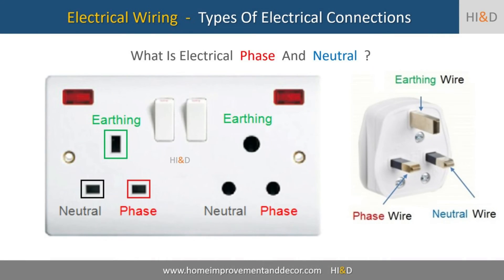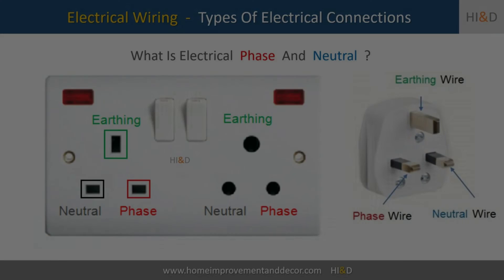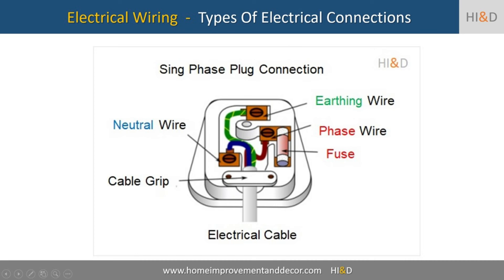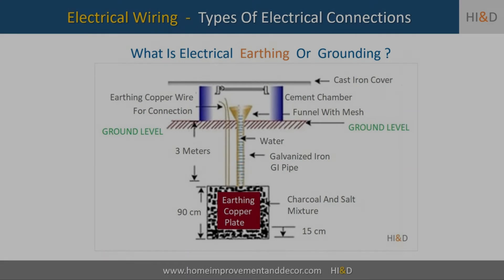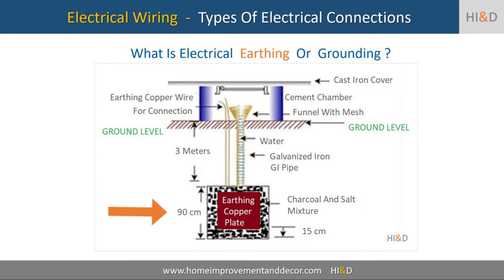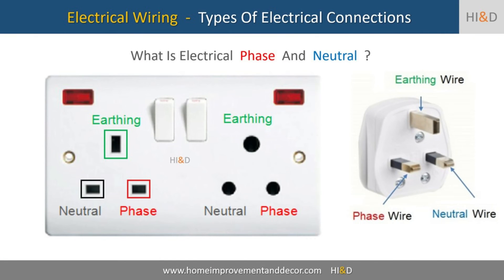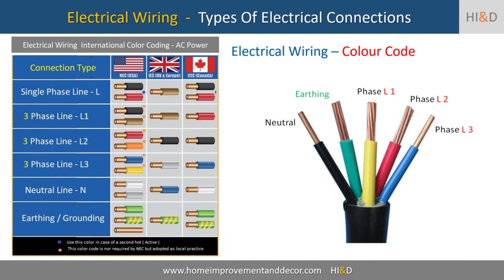Let us now discuss the third wire called the earthing. You will also notice a third type of wire present in the cable used to connect various electrical gadgets. This third wire is called an earthing or grounding wire. The earthing wire is an important safety mechanism that provides protection against electric shock. The earthing connection is created by embedding an earthing plate into the ground as per recommended standard practice and the electric code. The earthing wire is connected to the third middle pin of the three pin electric socket.